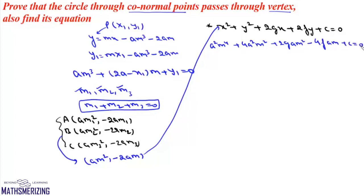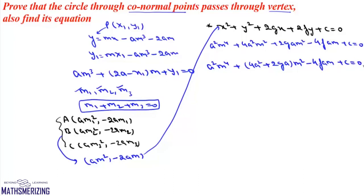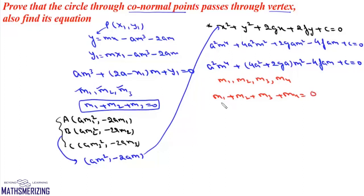Substituting x = am² and y = -2am into the circle equation, we can write: a²m⁴ + 4a²m² + 2g·am² - 4f·am + c = 0. This is a fourth-degree equation in m, which can be written as a²m⁴ + (4a² + 2ag)m² - 4fam + c = 0. This fourth-degree equation will have 4 roots: m1, m2, m3, and m4. Now the sum of roots m1 + m2 + m3 + m4: since there is no m³ term, the sum of all roots is zero.